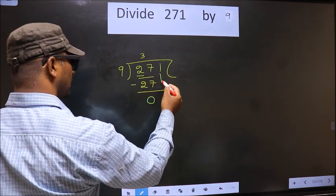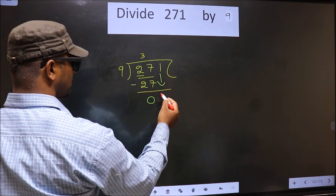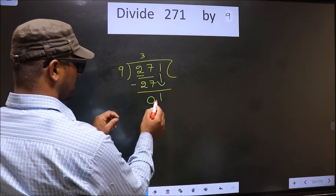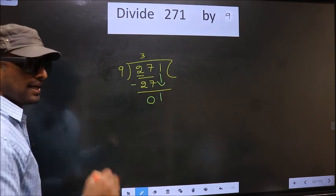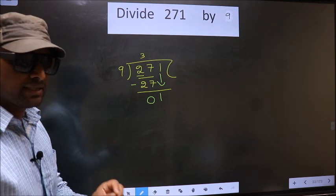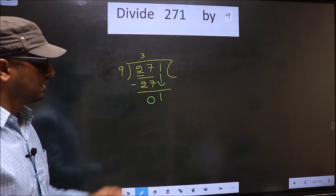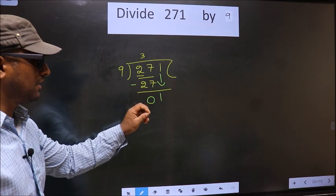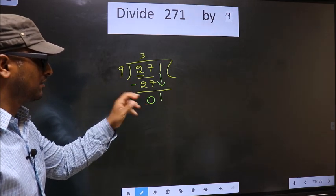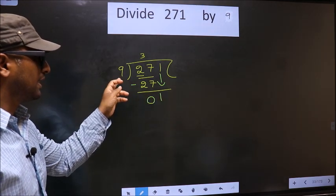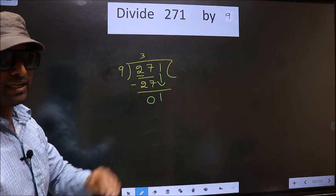Now we bring down the beside number, that is 1, down. This is where the mistake happens. And the mistake is this: here we have 1 here. 9, 1 is smaller than 9, so what many do is...